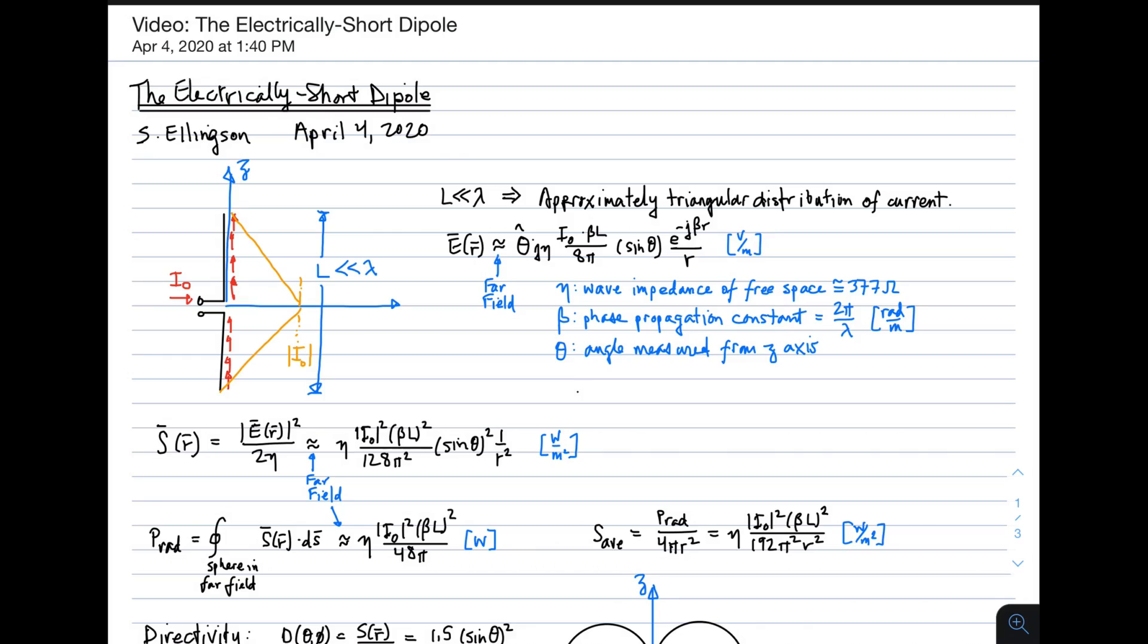An electrically short dipole is this structure shown in black here. There's some terminals, an applied current of I0, a straight dipole. We've got a coordinate system defined here as the z-axis. So the dipole is aligned along the z-axis. And the defining property of an electrically short dipole is that its overall length is much, much less than a wavelength.